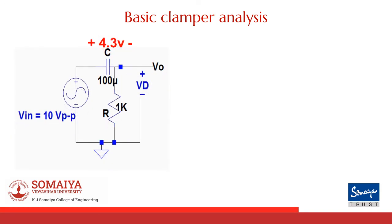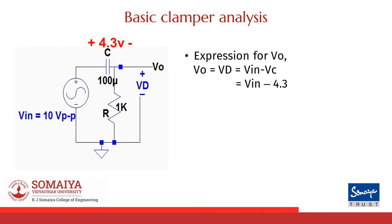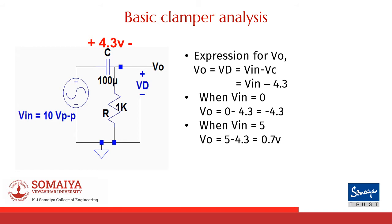The circuit shown here is an equivalent circuit when the diode is reverse biased. Remember, the capacitor has already charged during the first positive peak. Now, the expression for Vout can be written as input voltage minus the capacitor voltage, which is equal to 4.3 volts in this case. So when input is equal to 0.3 volts, output would be minus 4.3 volts. When input is equal to 5 volts, output would be 0.7 volts. And when input is equal to minus 5 volts, output would be minus 9.3 volts.